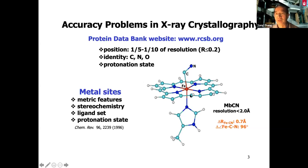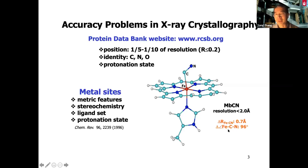For example, for some metal binding sites — which are important, like for myoglobin, which everyone uses to transport oxygen — some ligands can bind there. Even with resolutions better than 2 Ångströms, the iron-carbon bond length can vary as much as 0.7 Ångströms. The bond length itself is about 1.7, so the error margin is very large, and the bond angle variation can be even larger — about 96 degrees.